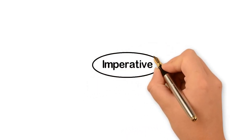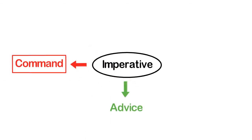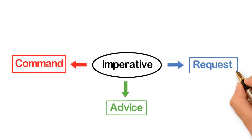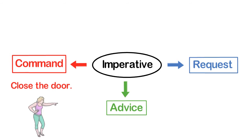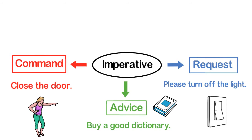First of all, what is an imperative sentence? An imperative sentence is used to give an order or command, advice, or request. For example, an order or command: 'Close the door.' An example of advice: 'Buy a good dictionary.' An example of a request: 'Please turn off the light.' These are the 3 ways in which an imperative sentence functions.